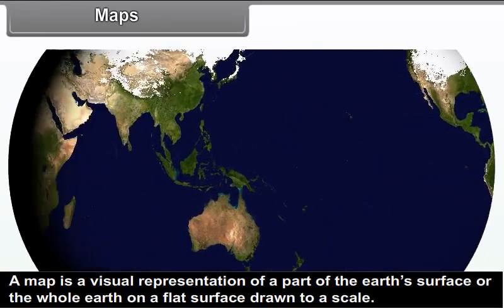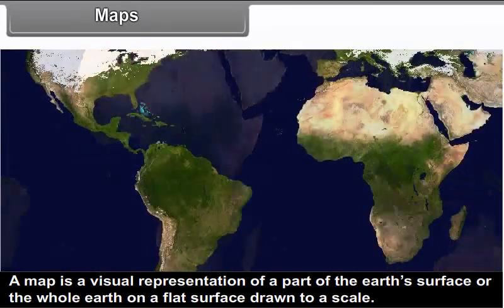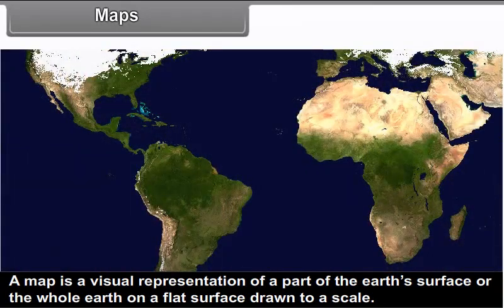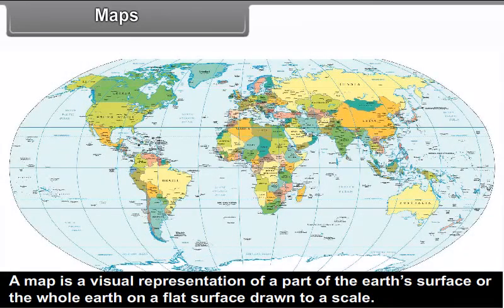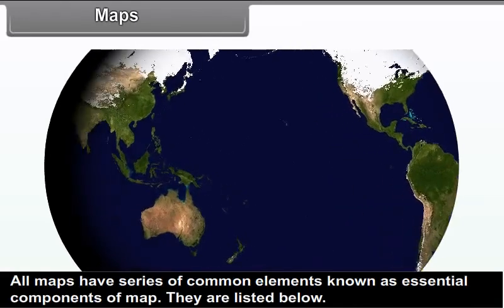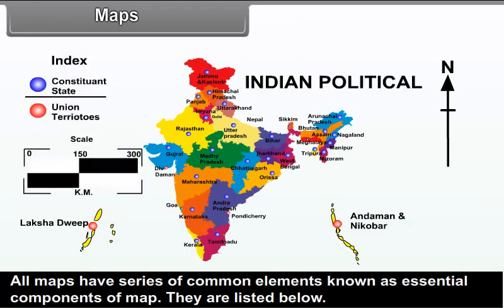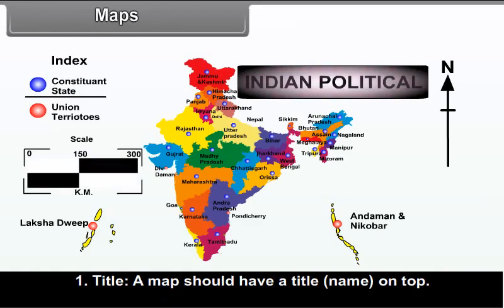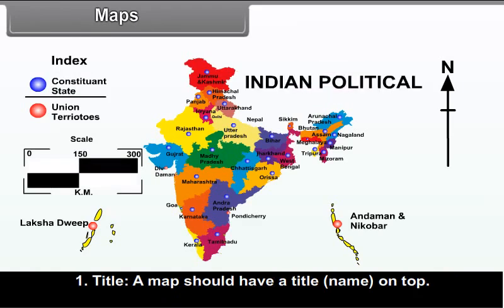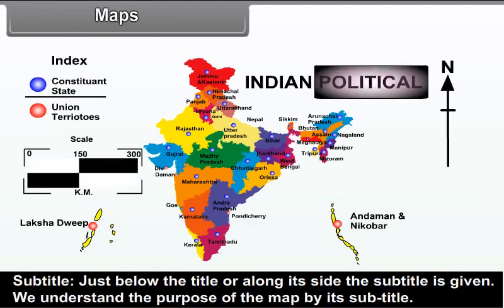9.2 Maps: A map is a visual representation of a part of the earth's surface or the whole earth on a flat surface, drawn to a scale. All maps have a series of common elements known as essential components. These include: Title — a map should have a title or name on top; and Subtitle — given just below the title or along its side, which helps us understand the purpose of the map.